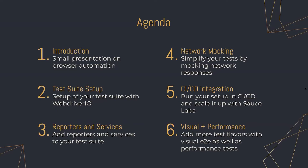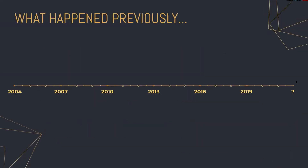Lastly, we have some extras where we look into visual and performance testing approaches, which are exciting as well. So I want to give a little overview of what has happened in the last decade. Browser automation has been around for a long time already, and it has been interesting how it has evolved given all the developments in the web ecosystem.